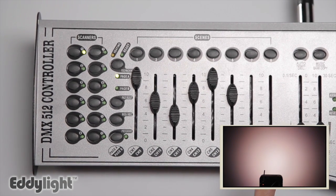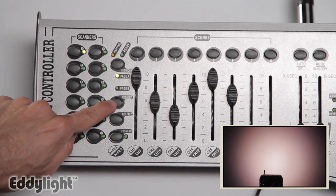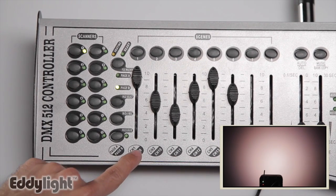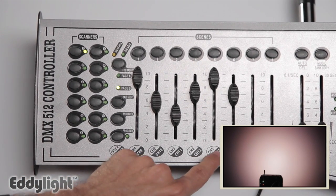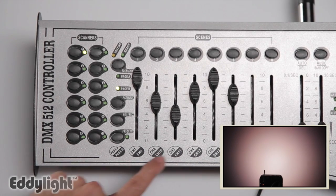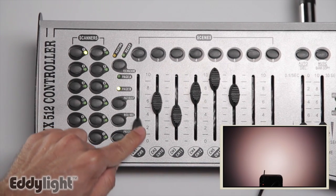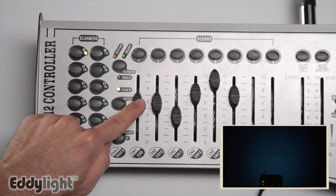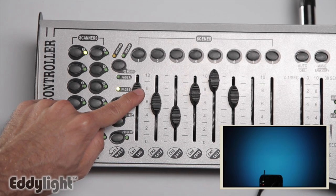To access channel 9, you must hit page select. And now we are using channels 9, 10, 11, 12, 13, 14, 15, and 16. We're only interested in channel 9, which gives us some color fading options.